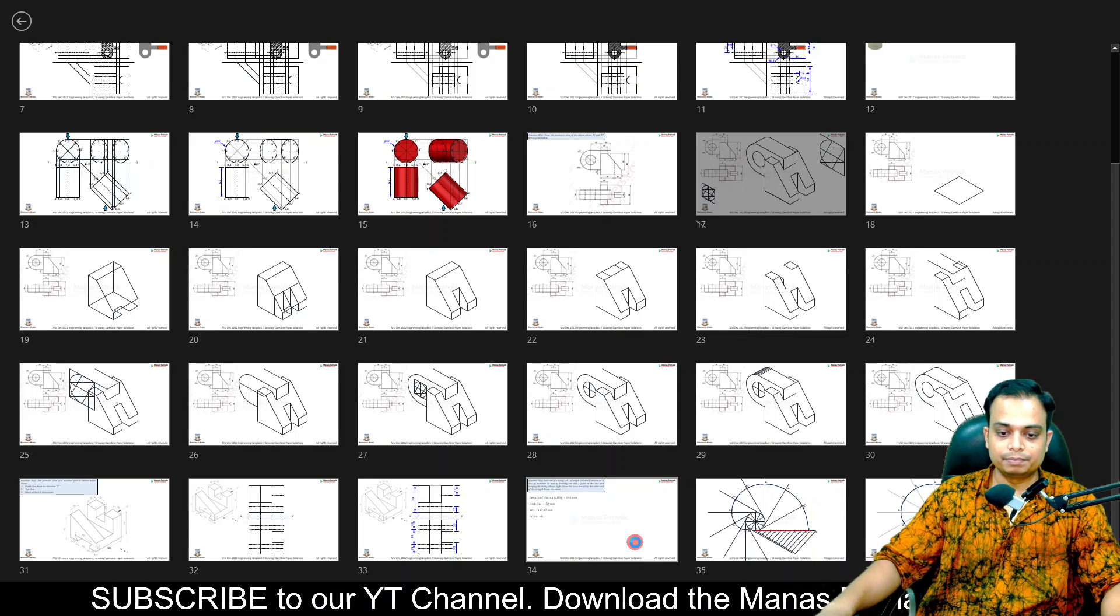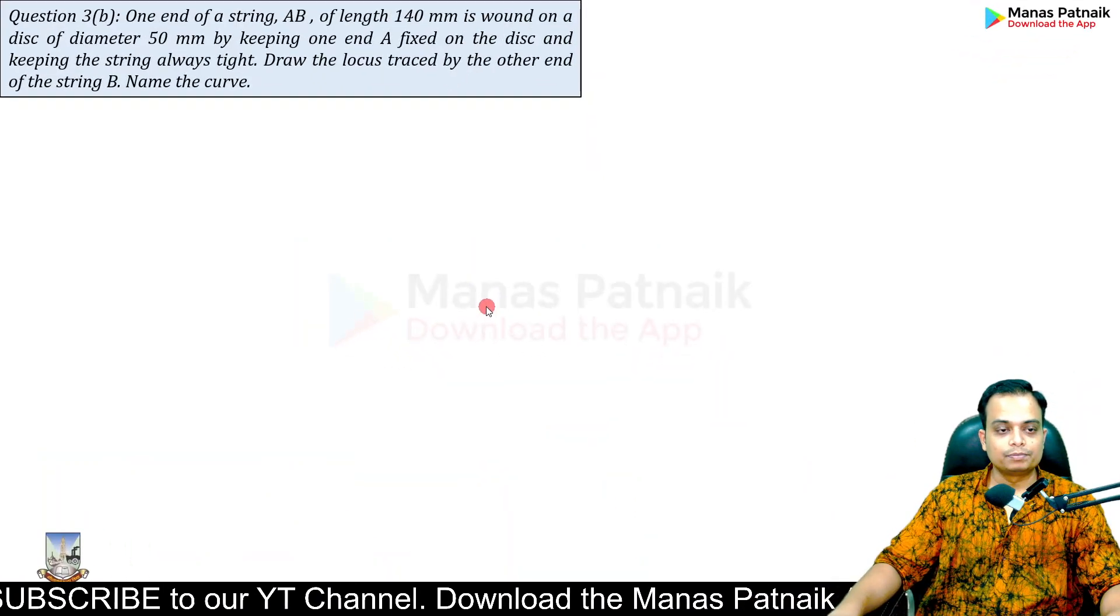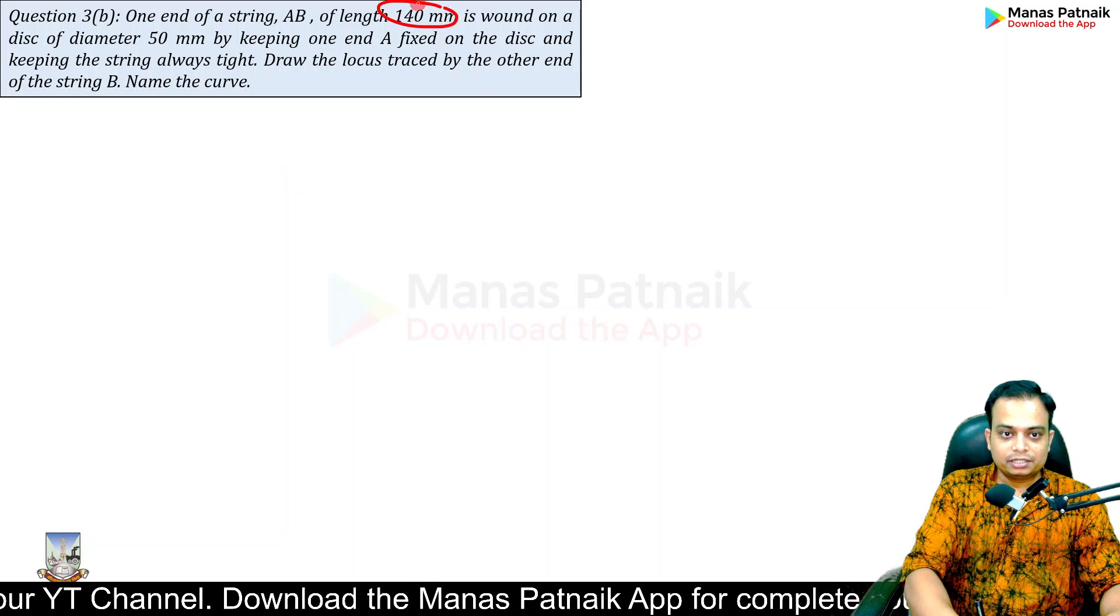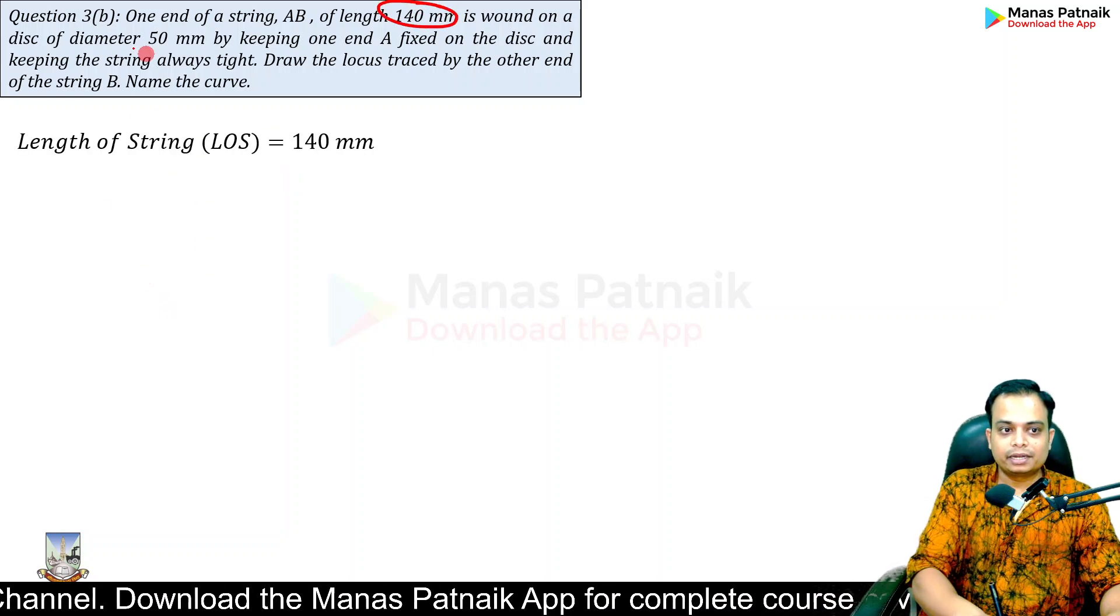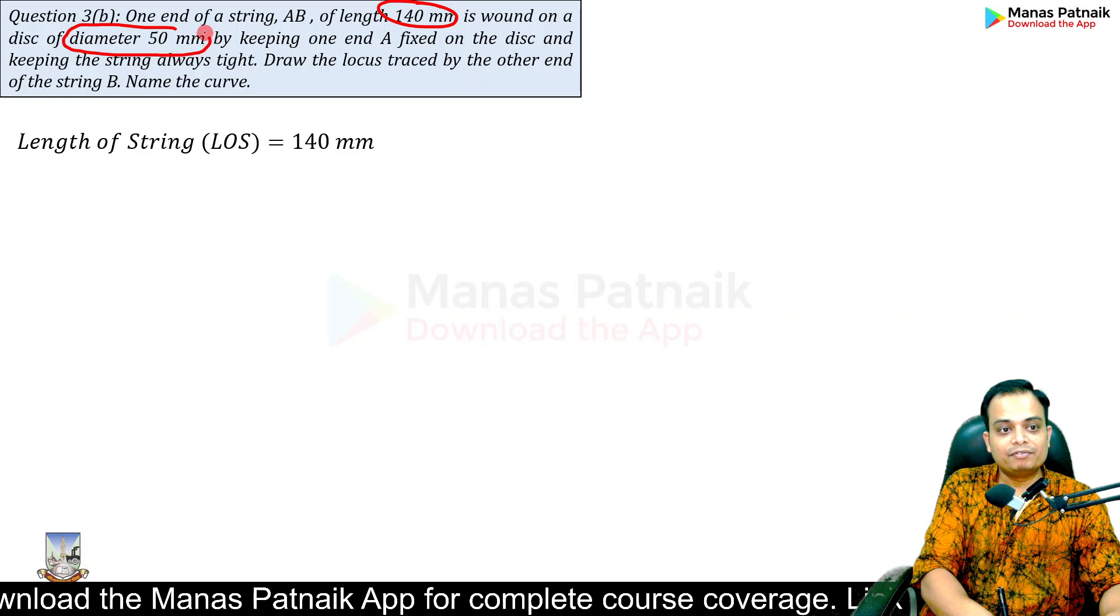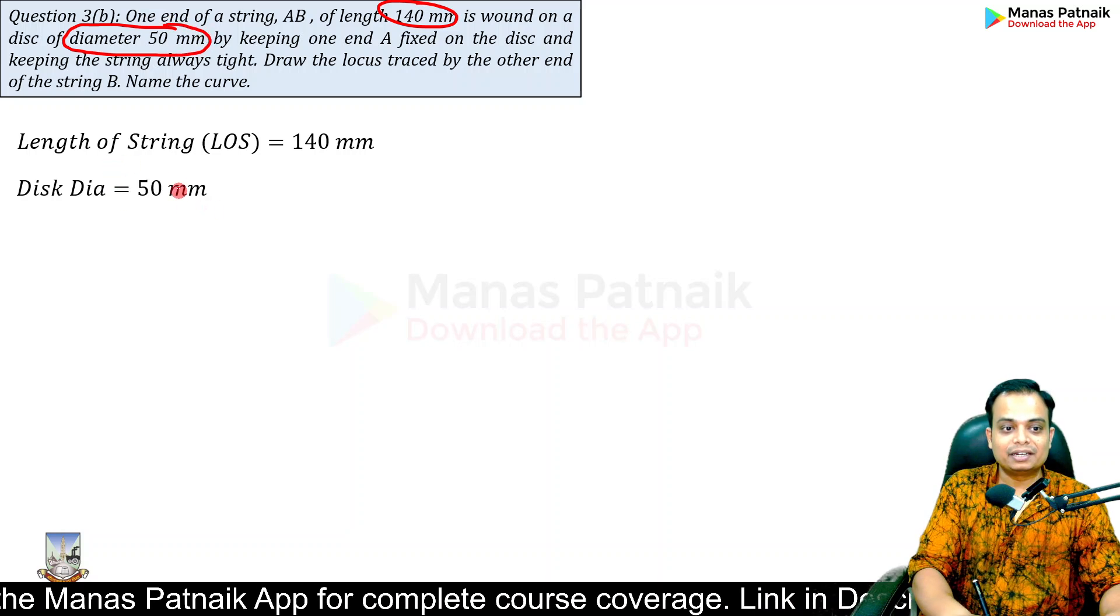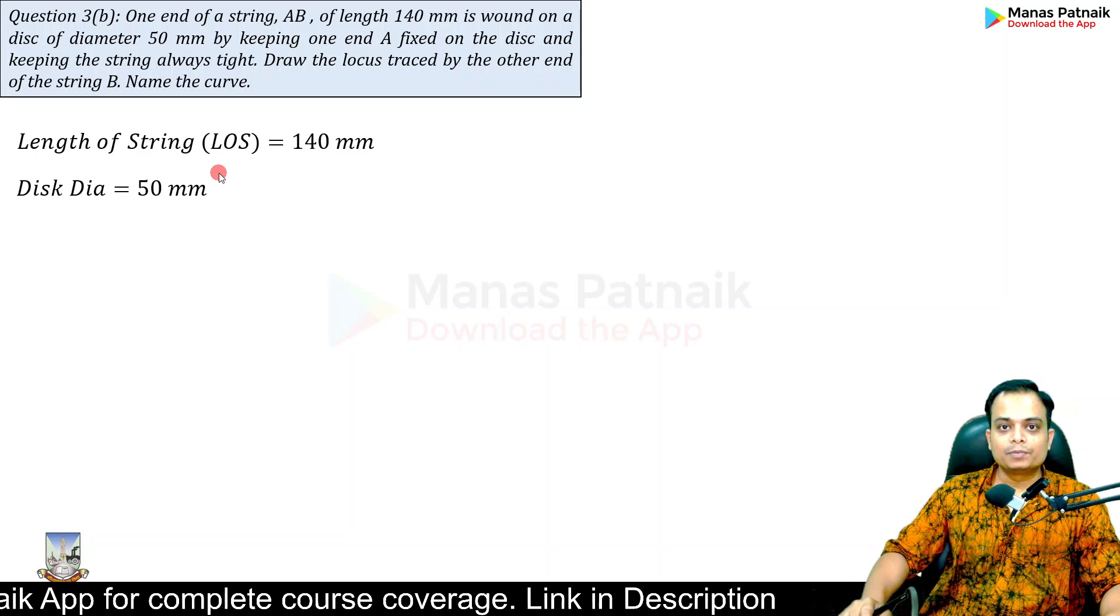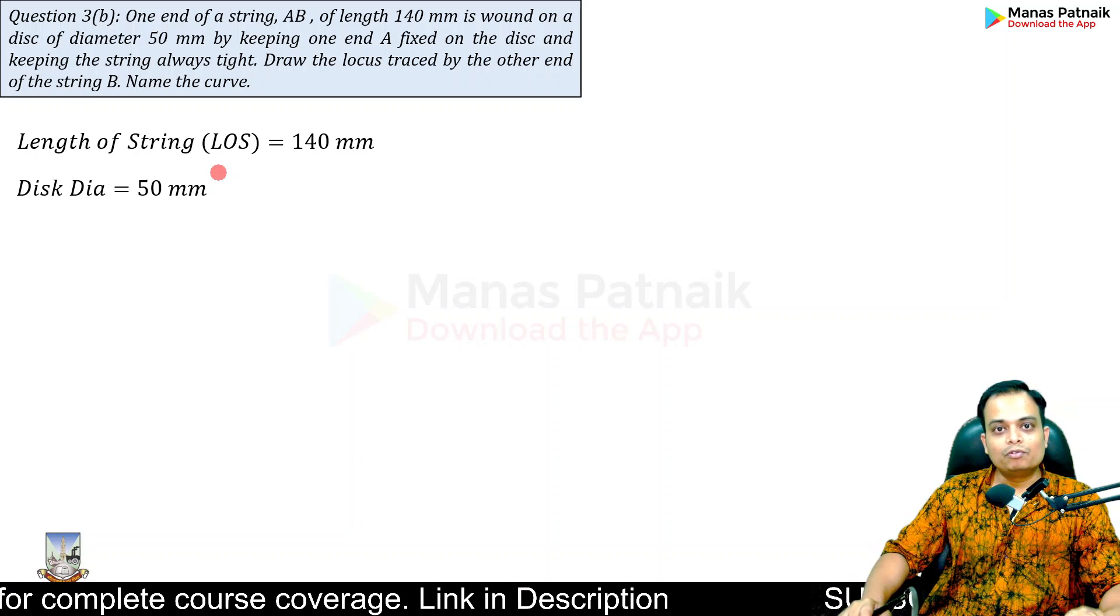There is a string - what is the length of that string? It is 140. Secondly, it has to be wound around a disc of diameter 50 millimeters, so the disc diameter is 50.